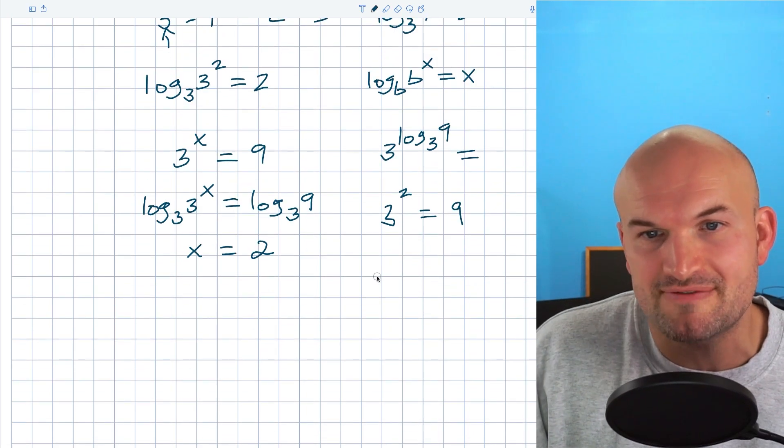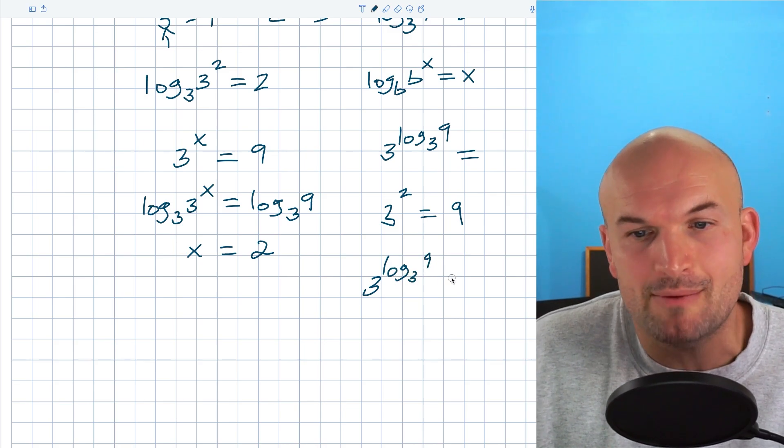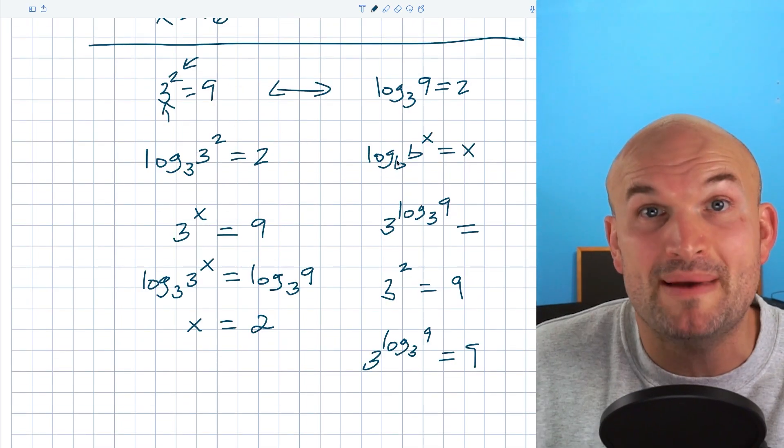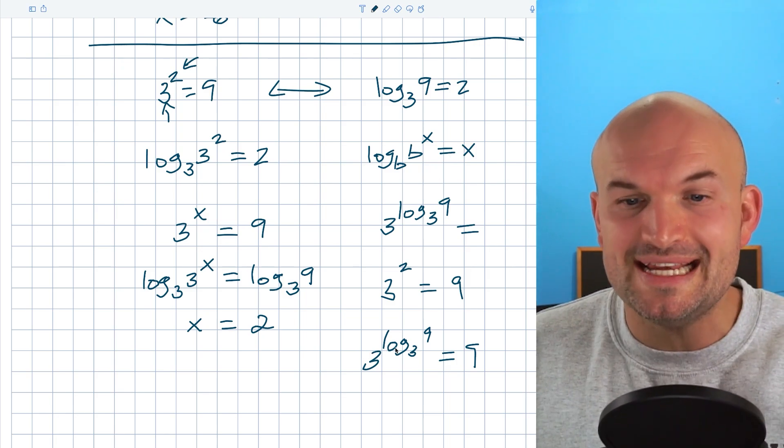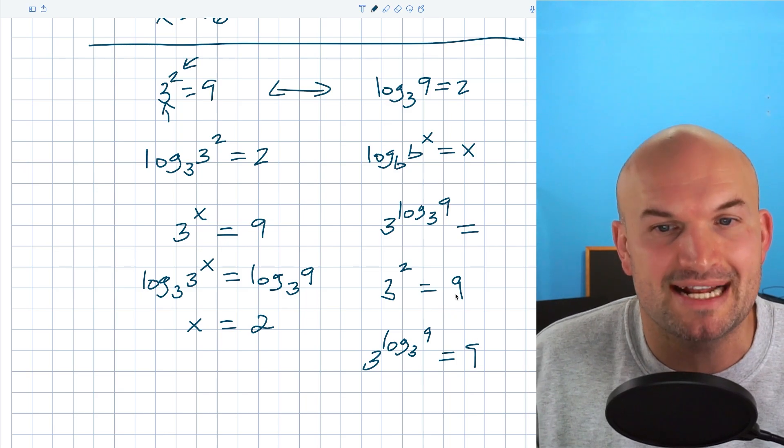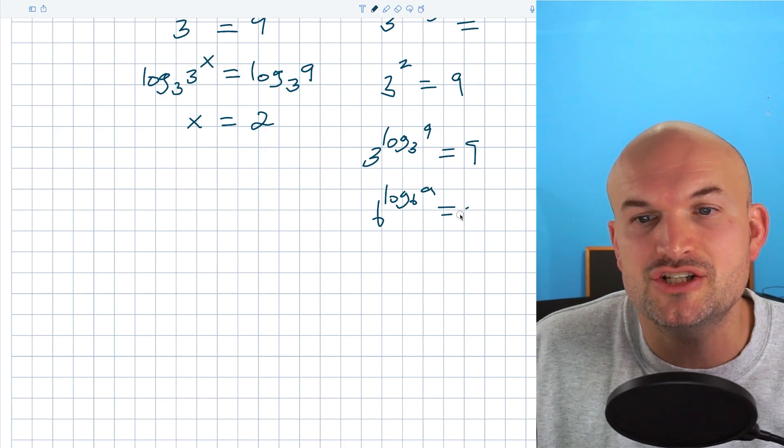Now, this is very important because if I have 3 raised to the log base 3 of 9, the 3 log base 3 is basically irrelevant. And we just know our answer is going to equal 9. Just like we did before when we have the log base b of b raised to the x, that just equals x. So when I have 3 raised to a logarithm of the same base, whatever that argument is, that's going to be your answer. So we can summarize this as b raised to the log base b of a is just going to equal a.